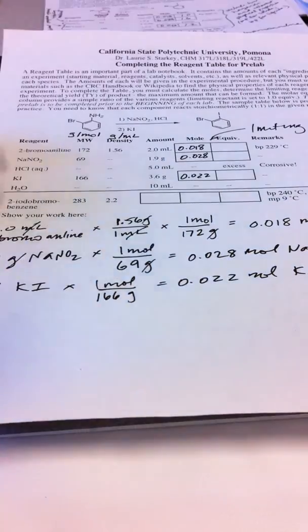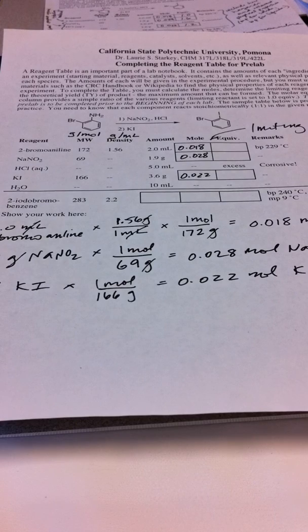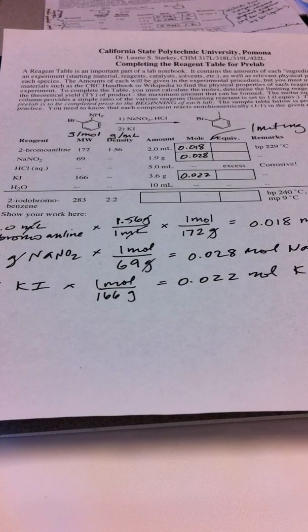For this determination, we would exclude anything that we are using catalytically, a catalyst or sometimes acids are added catalytically. We wouldn't worry about, we can calculate the number of moles, but we wouldn't ever use that to decide our limiting reactant because it's not something that's consumed in the reaction.